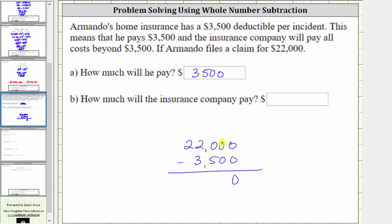In the tens, zero minus zero is zero. In the hundreds, we cannot subtract five from zero. We need to perform an exchange with the two in the thousands place value.